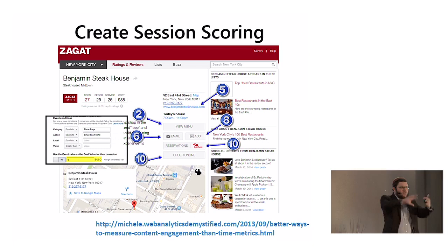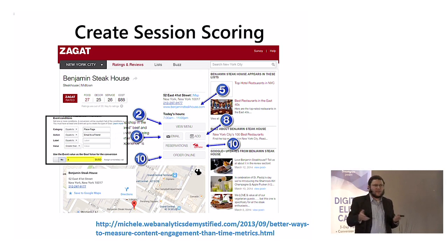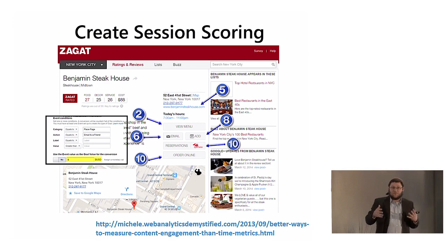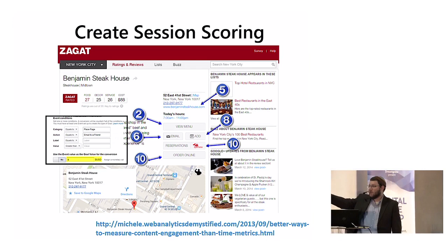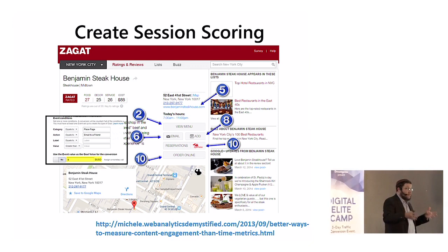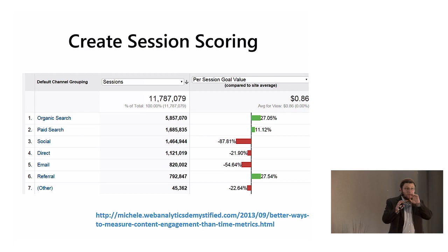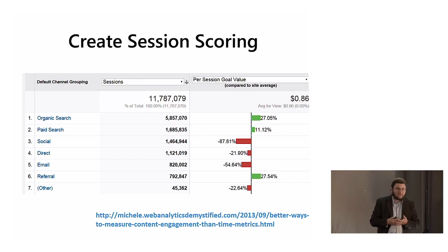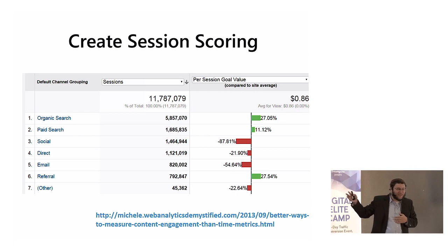Something else to consider: you might say, what are my goals? For example, this site reviews restaurants — their main goal is to have people find the restaurant they're looking for. One way they do that is session scoring. If you view a menu, you get a 2. If you email it to a friend, you get a 6. If you add it to your calendar, that's an 8. If you order online or make a reservation, that's a 10. By using session scoring, each interaction becomes a goal value, creating an ability to compare different channels across any dimension. This can work for any site, because any site really has goals and micro-goals.